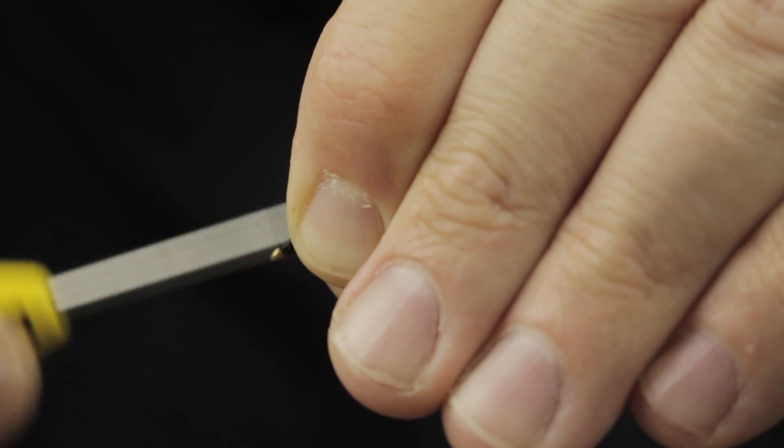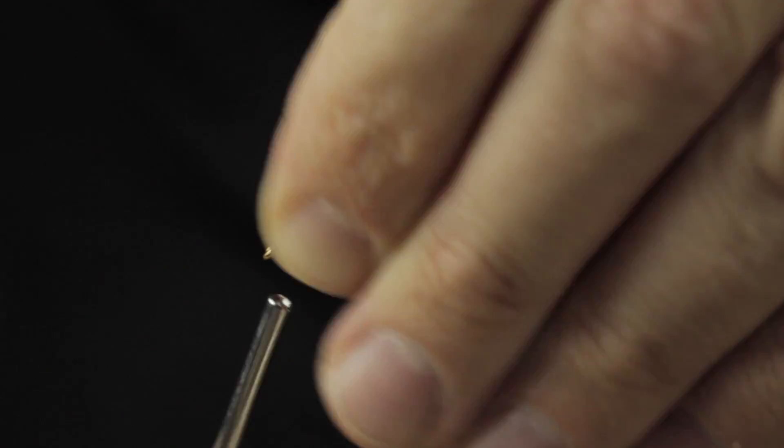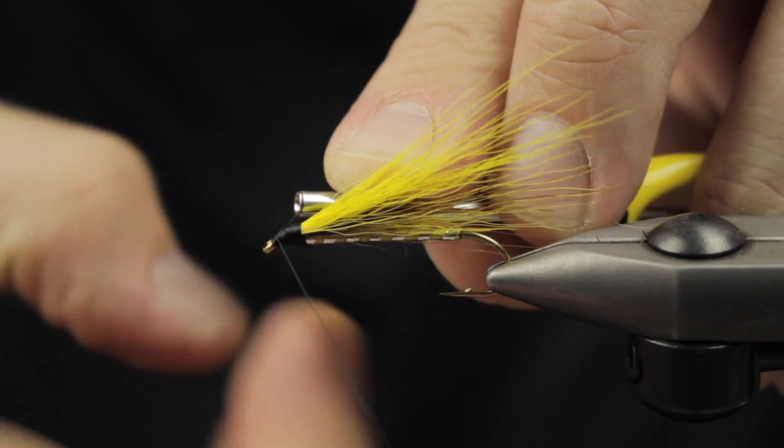We'll go ahead and... this has a pretty substantial thread head to it being that it's an older pattern. It's just got a lot more thread on the front of this fly. We'll go ahead and do a whip finish, and that's going to finalize the pattern. Trim off your thread.